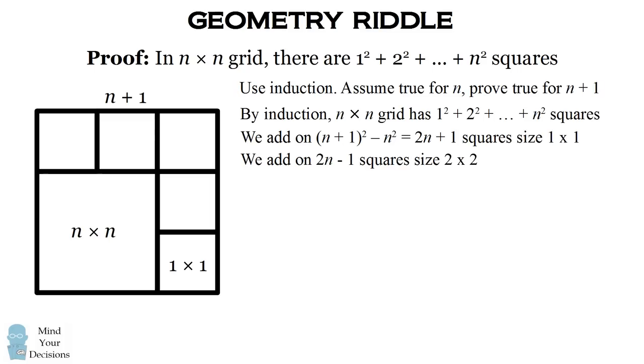Now you want to count the number of 2 by 2 squares that you can create. This will be 2 fewer, and the number of 3 by 3 squares will also be 2 fewer. And this pattern continues, and you can add on exactly 1 square that's size (n+1) × (n+1).